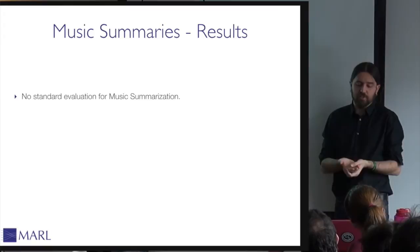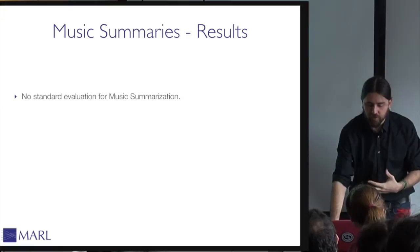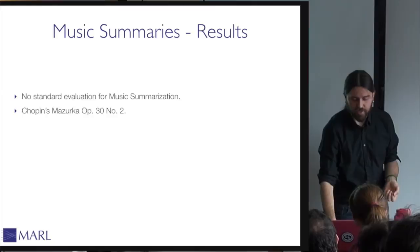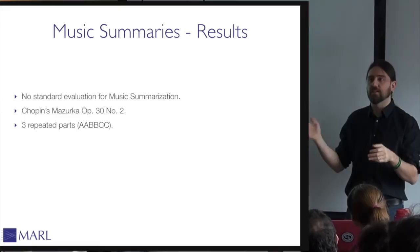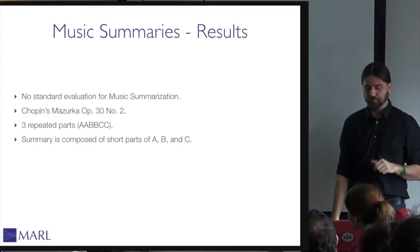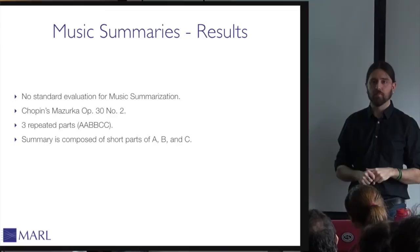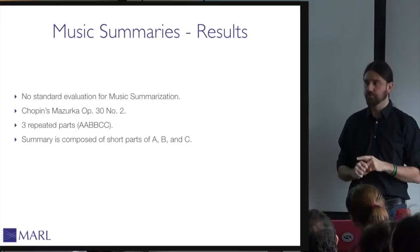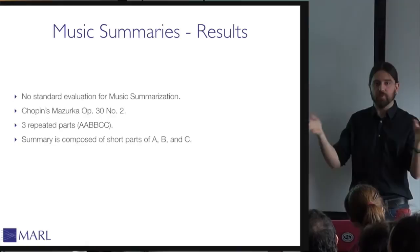Unfortunately there is no standard way of evaluating music summarization yet, so I played an output of my algorithm on Chopin's Mazurka Op. 30 No. 2 — a piece with three repeated parts A, A, B, B, and C, C. The summary is composed of short parts of A, B, and C, and the algorithm is capable of identifying all the different parts and generating the summary automatically.